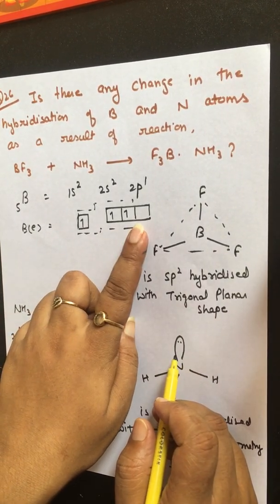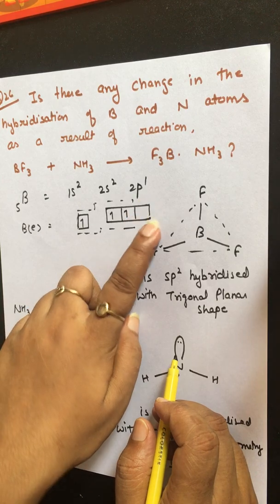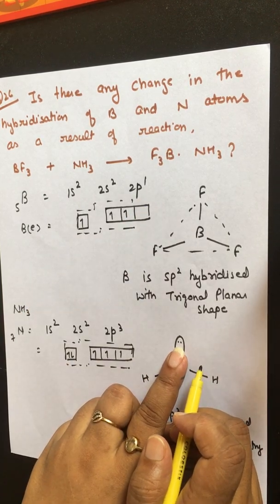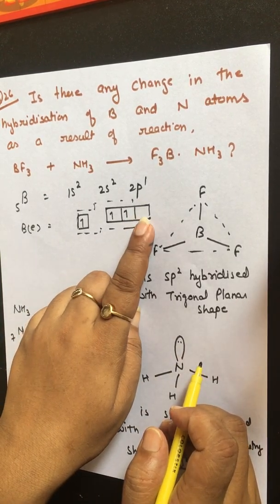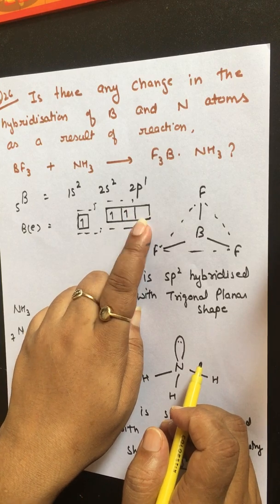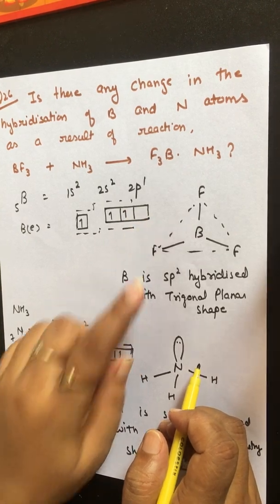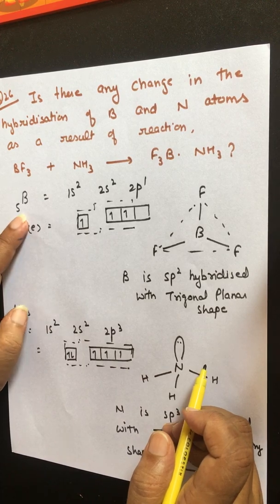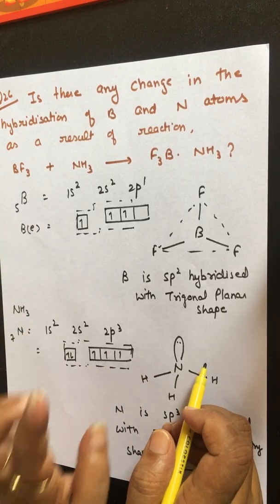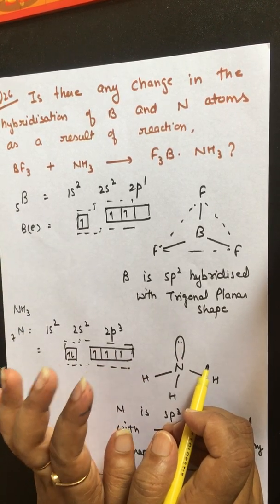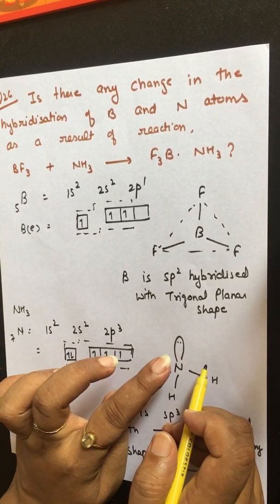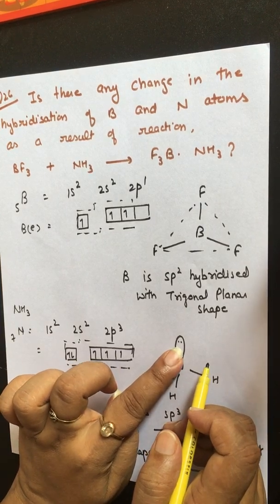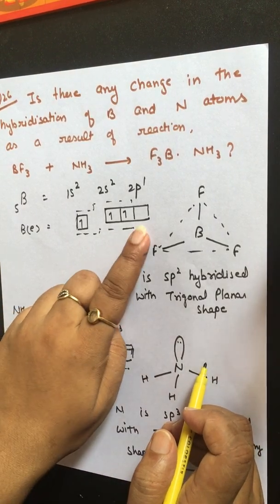Boron in BF₃ has one vacant p orbital, so the nitrogen lone pair can be donated to the boron vacant orbital so that both nitrogen and boron complete their octet. This means coordinate bond formation will occur — a coordinate bond formed by the lone pair of nitrogen donated to the boron vacant orbital.